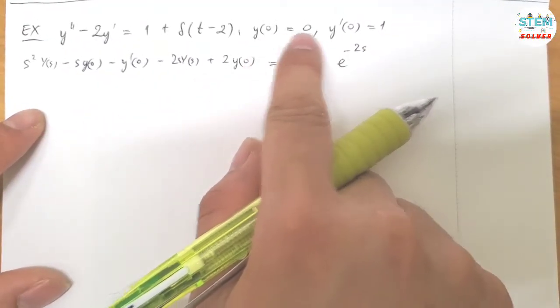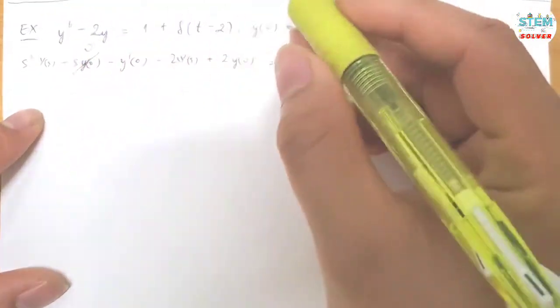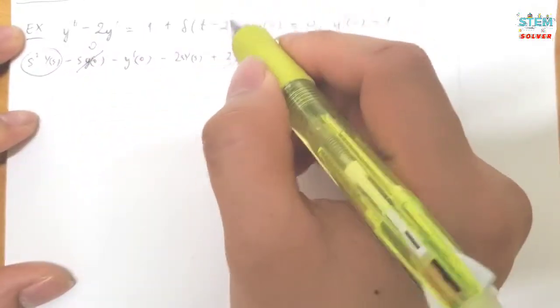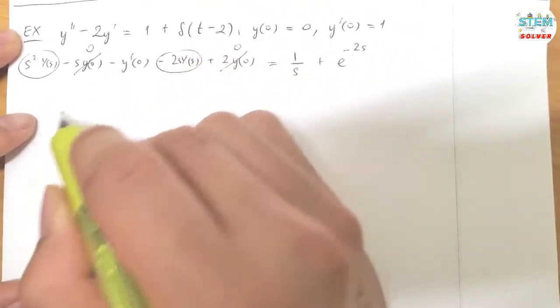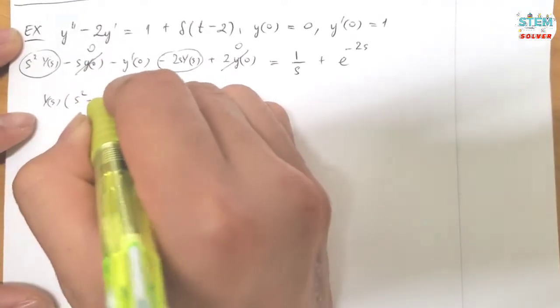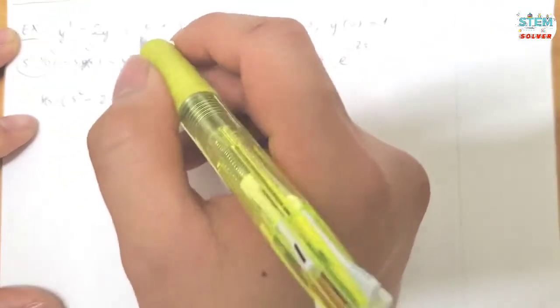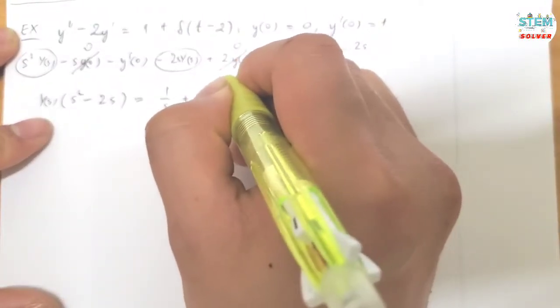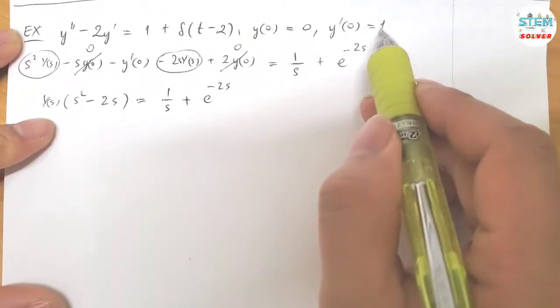Now, plug in the conditions Y of 0 equals 0, so this becomes 0, this becomes 0. So looking at capital Y of S, factor out capital Y of S, I have S squared minus 2S. Equals 1 over S plus E to the negative 2S.